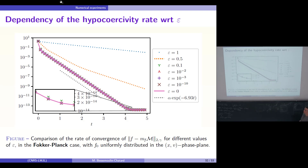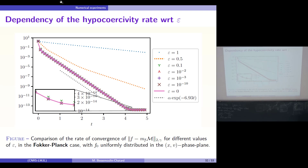To conclude, I presented a numerical scheme for the 1D linear kinetic equation, for both the Fokker-Planck and linear BGK cases. We obtain a complete proof of the asymptotic-preserving properties in the diffusion limit. We also adapted the hypocoercivity method to the discrete setting and obtained exponential return to equilibrium uniformly in epsilon. The perspectives are to extend to more general linear collision operators and to consider the case with an electric field, coupling with the Poisson equation. Thank you very much.